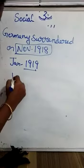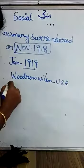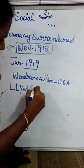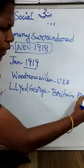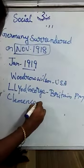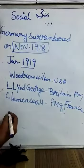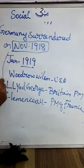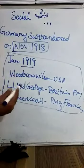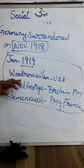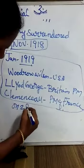It was signed between Woodrow Wilson of USA, Lloyd George — Prime Minister of Britain — and Clemenceau — Prime Minister of France. So these are the people who signed and who created the League of Nations. This was signed among themselves: Woodrow Wilson of USA, Lloyd George, Prime Minister of Britain, and Clemenceau, Prime Minister of France. All these people signed on 28th June 1919.